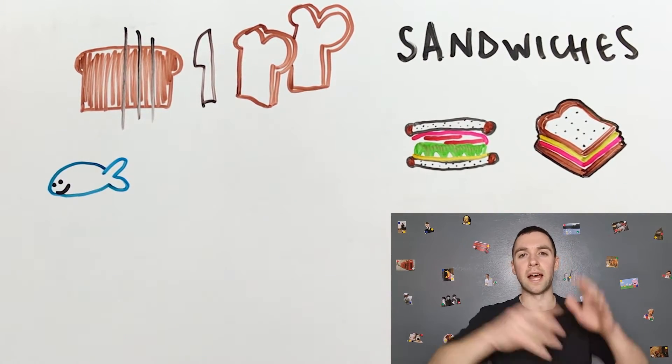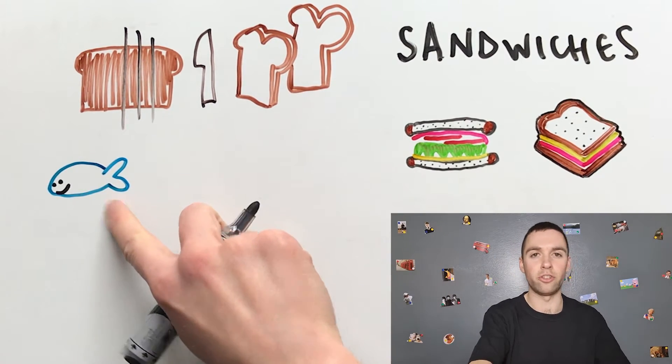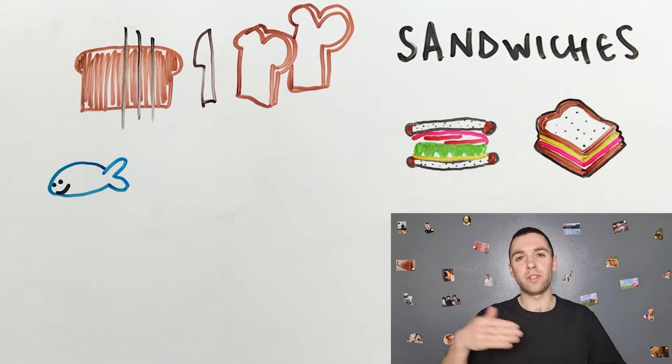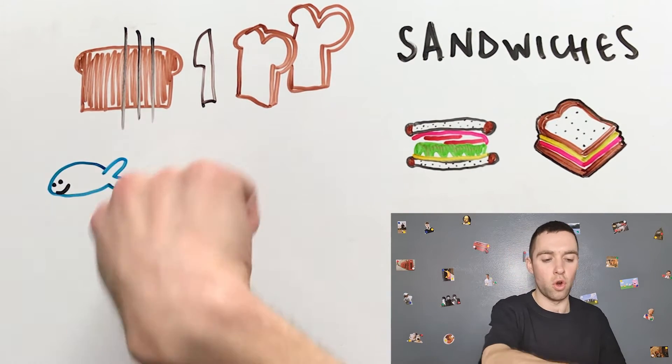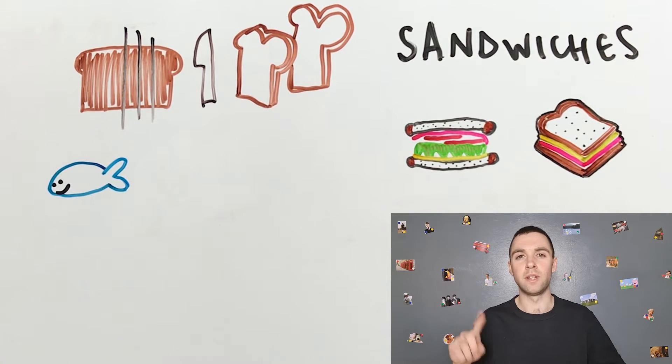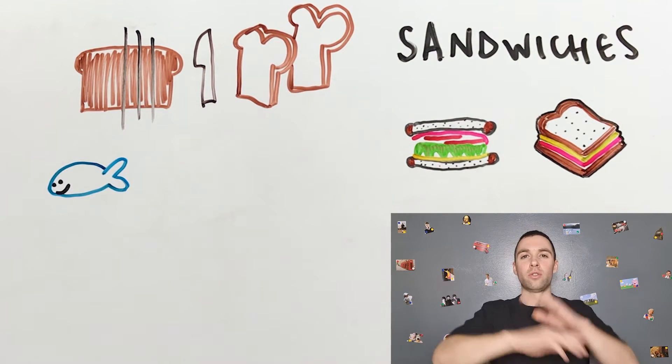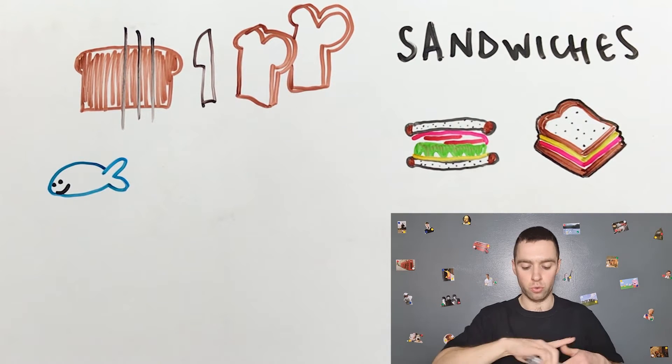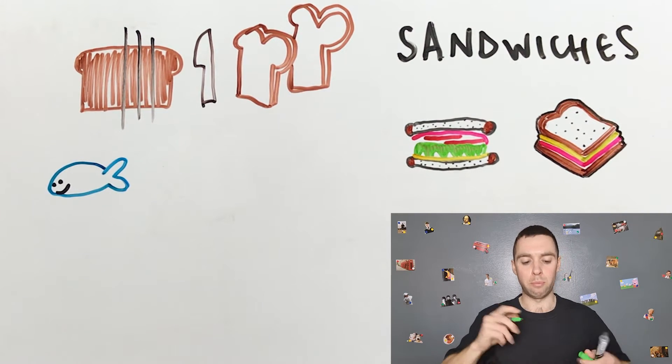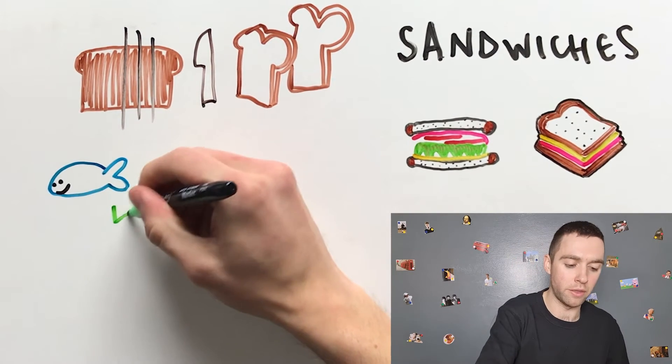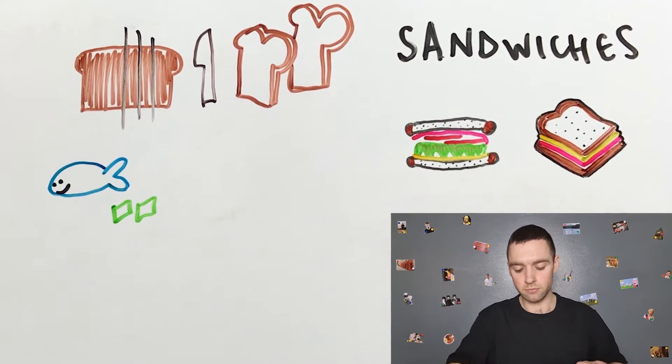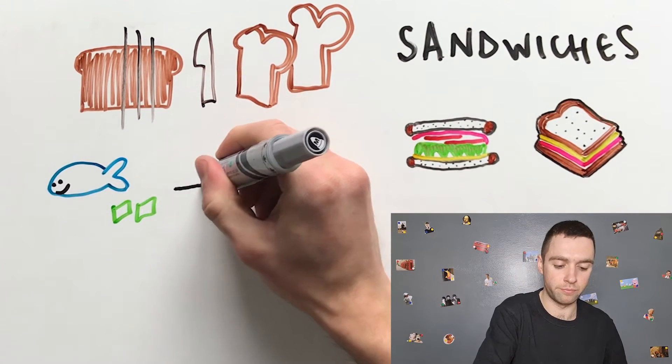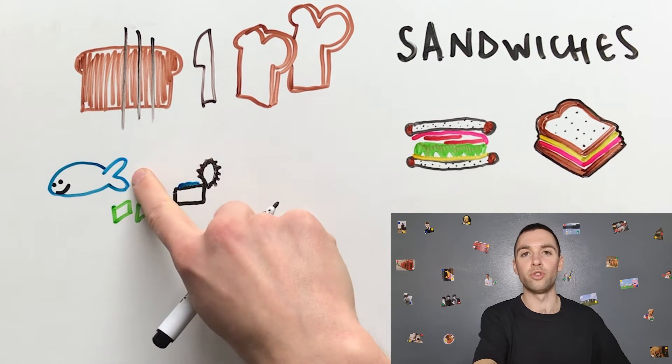Tuna is a big fish. I am not going to eat all of that tuna—no, that tuna is too big. So I am going to buy, with my money, a tin of tuna. A tin of tuna.